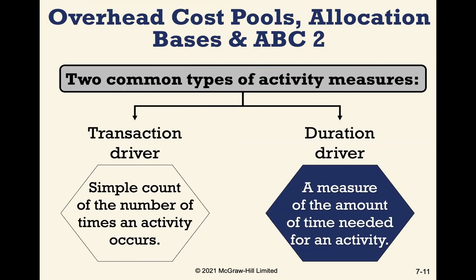A transaction driver is based on a count of the number of times an activity occurs. A duration driver measures the amount of time needed for an activity — for example, labour hours required for a particular activity. The transaction driver would be the number of times that activity occurs, such as the number of times a product moves through a particular press or dyeing process.